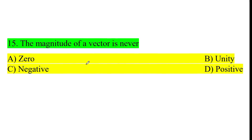Fifteenth question: the magnitude of a vector is never what? The magnitude of a vector can be zero, unity, positive, or negative. The answer is negative — a vector's magnitude is never negative.